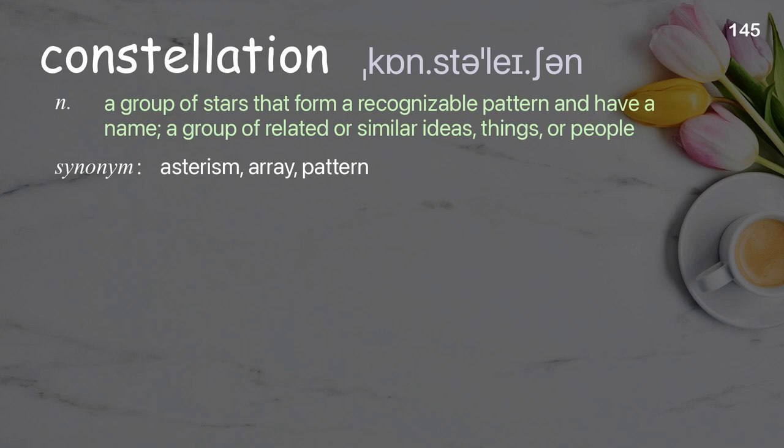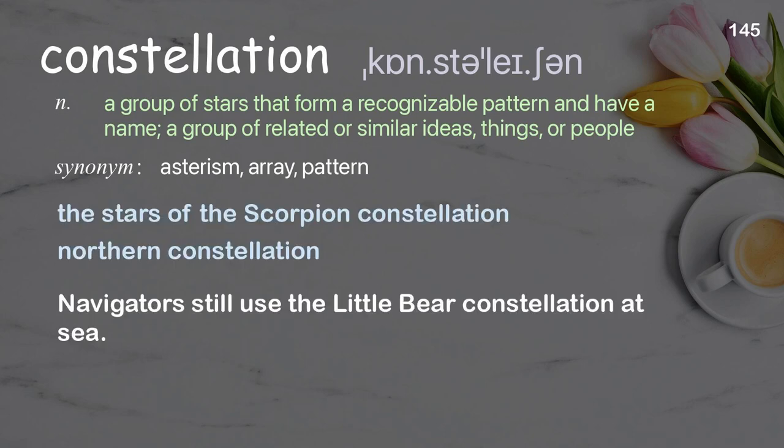Constellation: a group of stars that form a recognizable pattern and have a name; also a group of related or similar ideas, things, or people. Examples: the stars of the Scorpion constellation, northern constellation. Navigators still use the Little Bear constellation at sea.